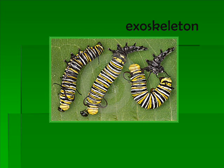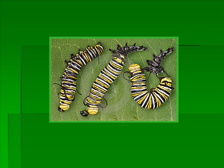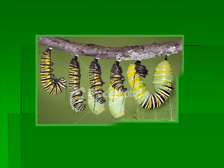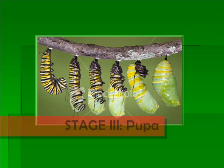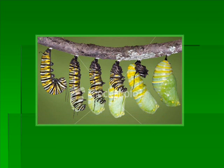Caterpillars grow at a very fast pace, and their exoskeleton — better known as their skin — can't stretch or grow. So the caterpillar sheds its skin, or molts, several times as it grows. Stage three is the pupa stage. When a caterpillar has finished growing, it's time to form a pupa by molting.